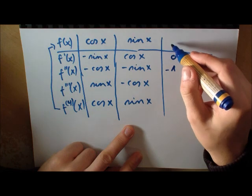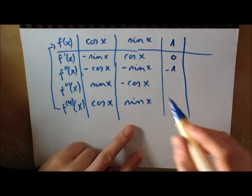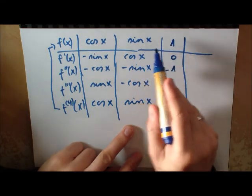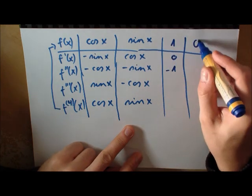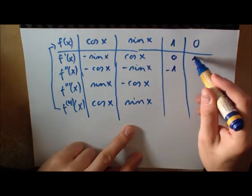We get one. The sine is evaluated at zero will give you zero. The cosine will give you one.